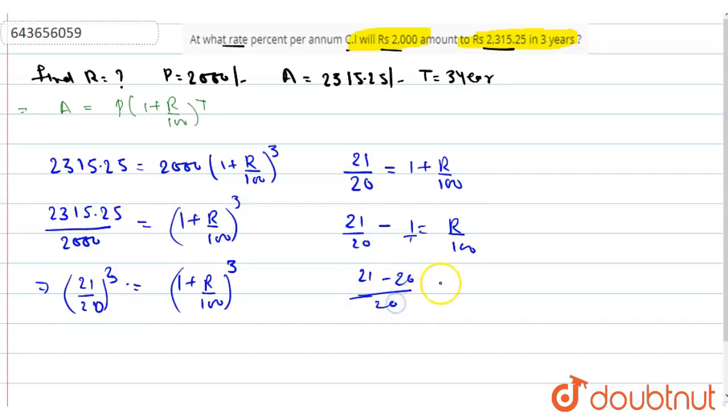So, 1 upon 20 equals R upon 100. This gives us R equals 5 percent. Therefore, in this question, the rate of interest is equal to 5 percent.